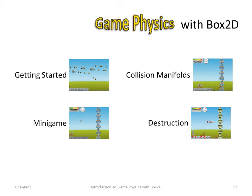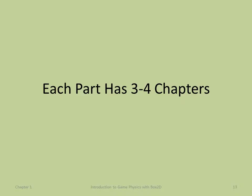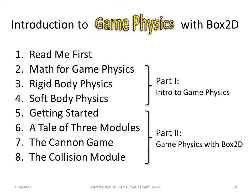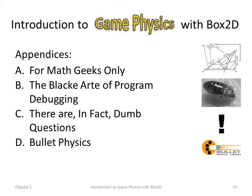Part 2 is game physics with Box2D. Getting started shows you how to download the code and integrate it into your game engine. We have a mini-game knocking down the books, and we talk about collision manifolds and how to destroy things. Chapter one, 'Read Me First', gets you warmed up. Chapters two, three, and four are Part 1: Math for Game Physics, Rigid Body Physics, Soft Body Physics. Part 2 has four chapters: Getting Started with Box2D, A Tale of Three Modules, a simple cannon game, and the Collision Module of Box2D.